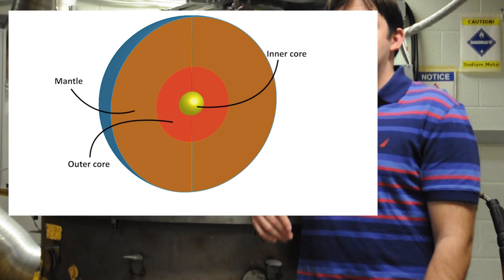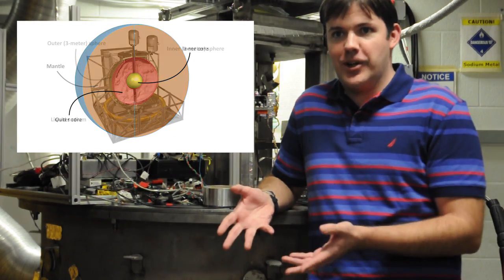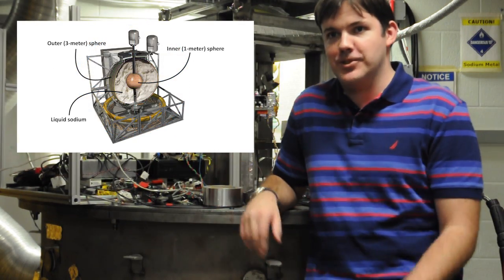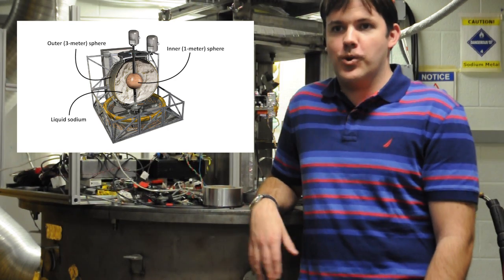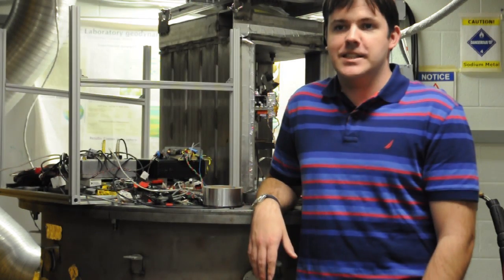And that is the source of Earth's magnetic field. Basically the outer shell, the three-meter shell, that kind of represents the mantle, the core-mantle boundary. And the liquid sodium stands in for the liquid outer core, and then we have an inner sphere that stands in for the inner core.